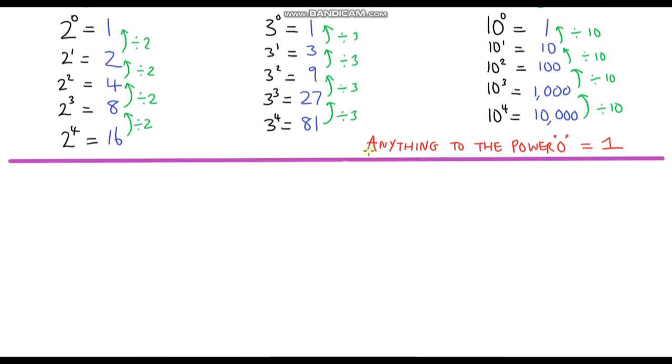I've just shown you that anything to the power 0 is 1, and that also includes variables. For example, if we had g to the power 0, well again that would also equal 1. Or we could even say Beavis from Beavis and Butthead to the power 0 - that will also equal 1. I hope you like my drawing of Beavis here.